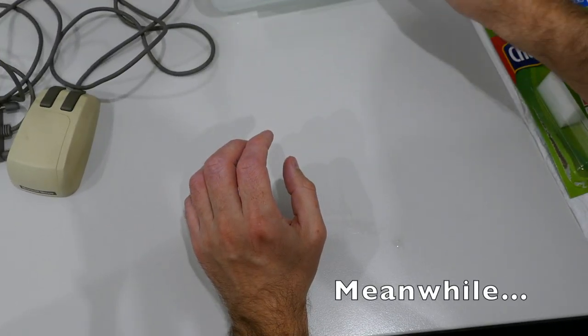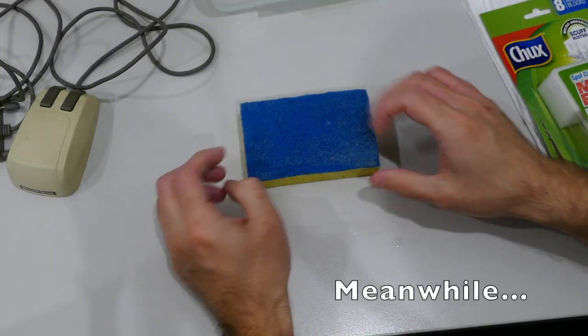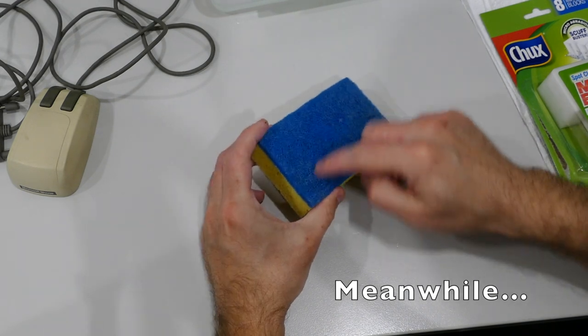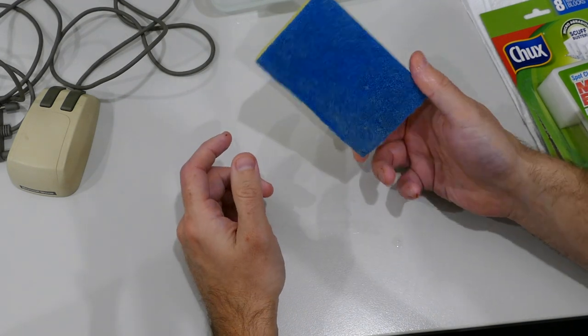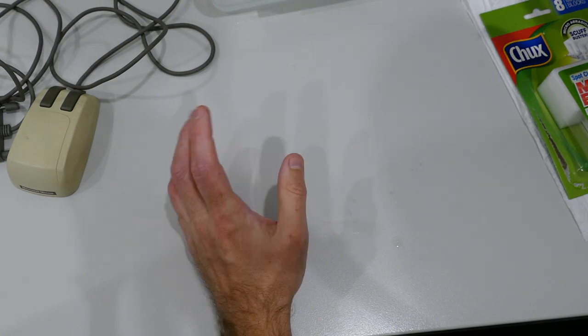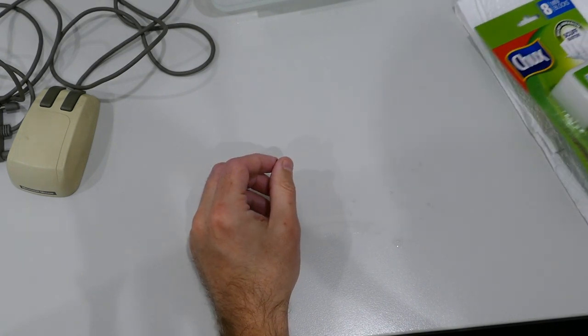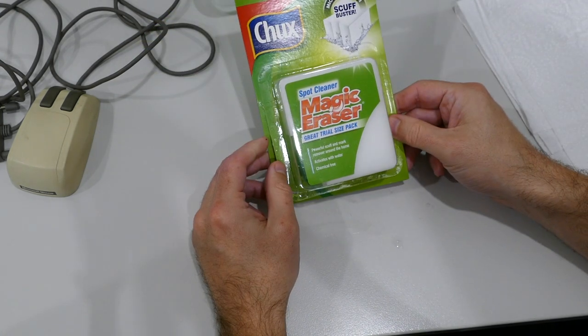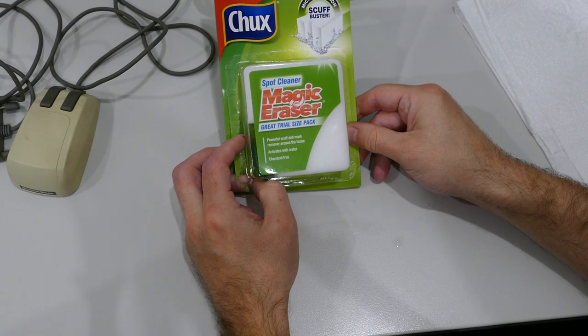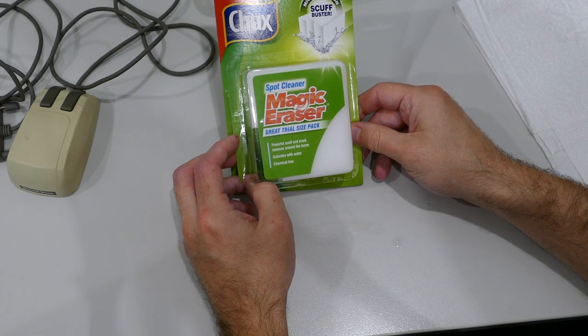And then if that doesn't work, then I'm going to bring out the big guns and use something with a bit more abrasion, this normal pad. And then hopefully that cleans everything off, and then what I can do at that point is use these magic erasers, which I've recently become friends with.